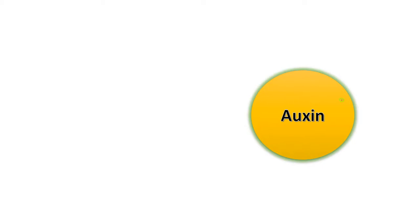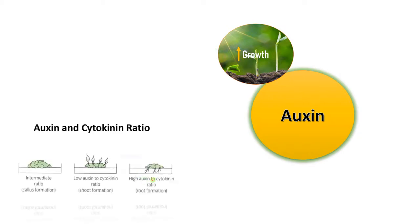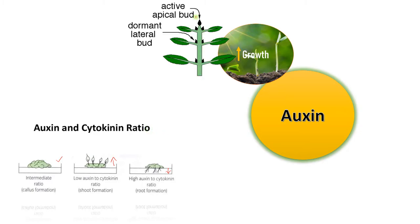Auxins are growth promoters involved in cell division and differentiation. In tissue culture, a high auxin-to-cytokinin ratio favors root formation, a low auxin-to-cytokinin ratio favors shoot formation, and an intermediate concentration favors callus formation. Auxin and cytokinin together are widely used in tissue culture for shooting, rooting, and callus formation. Auxin also favors apical bud dominance while inhibiting lateral bud activation, keeping lateral buds dormant.